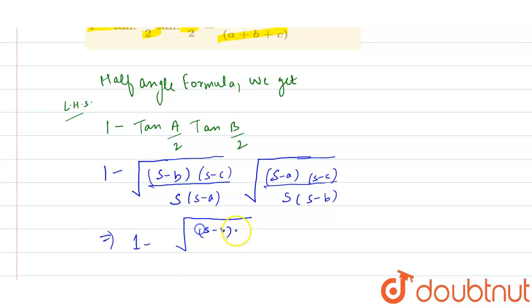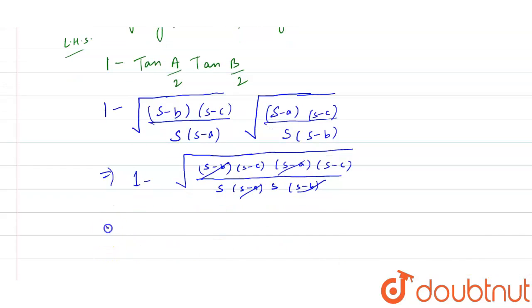So s minus b and s minus b cancel out, and s minus a and s minus a cancel out. We get this will equal 1 minus the square root of s minus c whole square divided by s square.